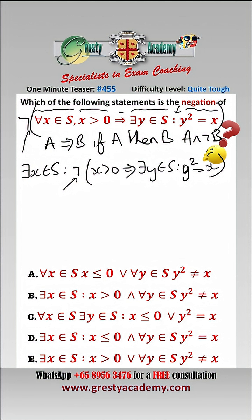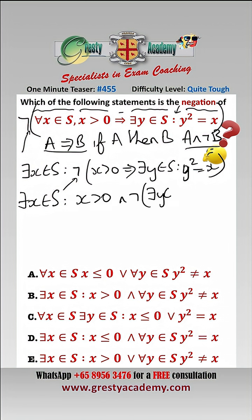Now we need to deal with this negation. We've already said that the negation of A implies B is A and not B, so we have: there exists an x contained in S such that x is greater than 0, and not there exists a y contained in S such that y squared equals x.